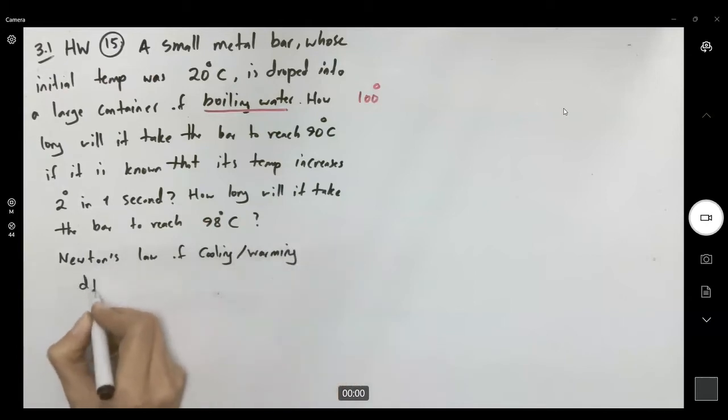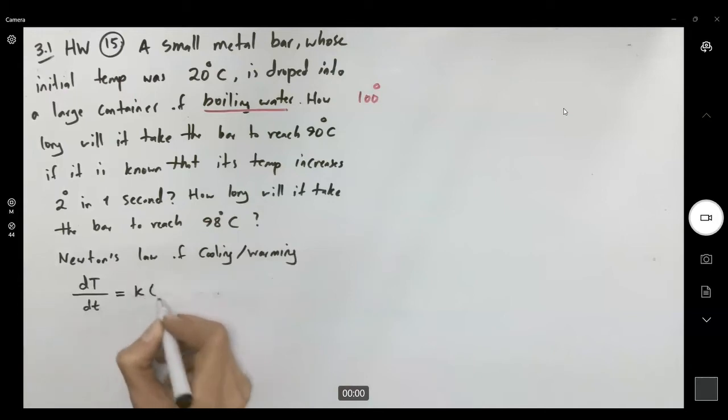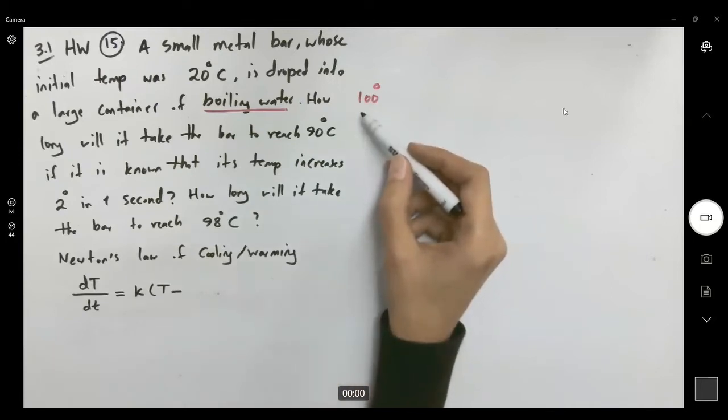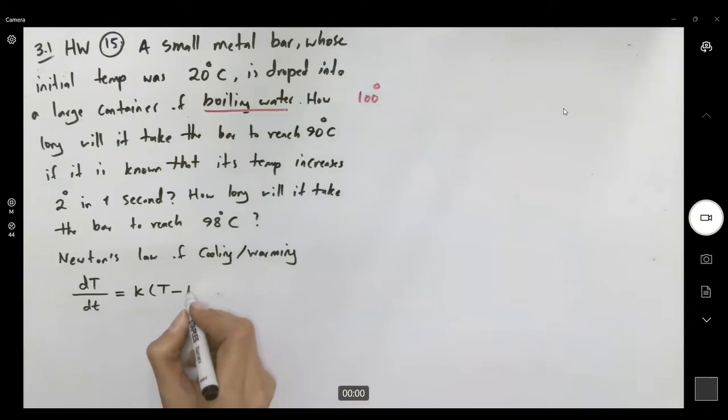The rate of change of the temperature with respect to time is proportional to the difference between the temperature and the temperature of the environment it is set to. So it's going to be 100 degrees.